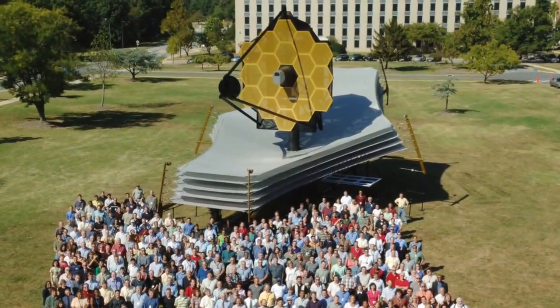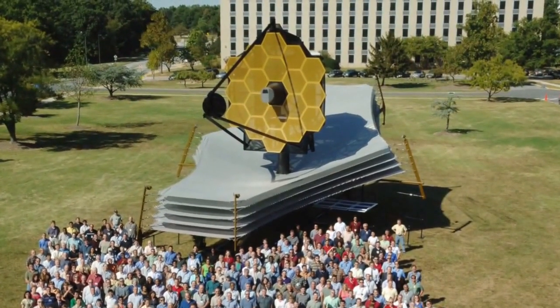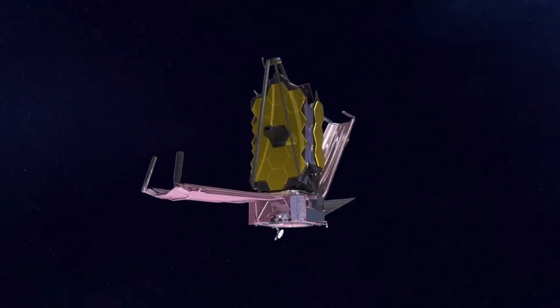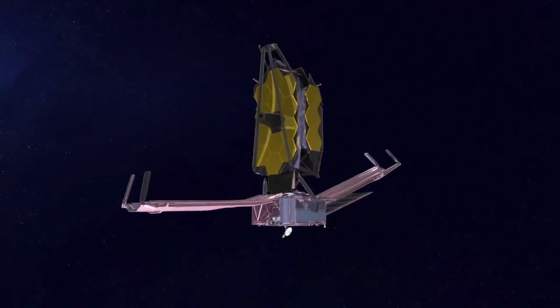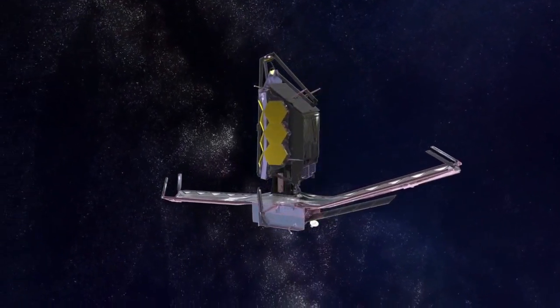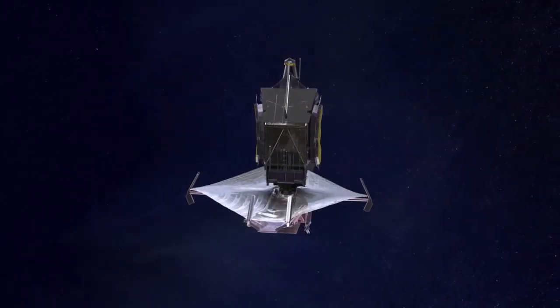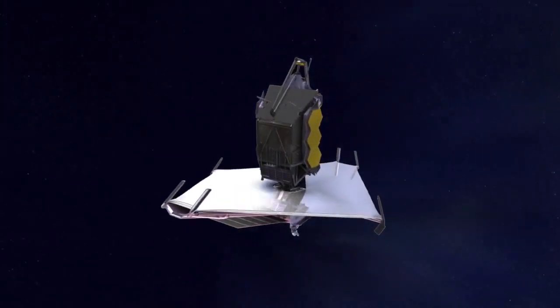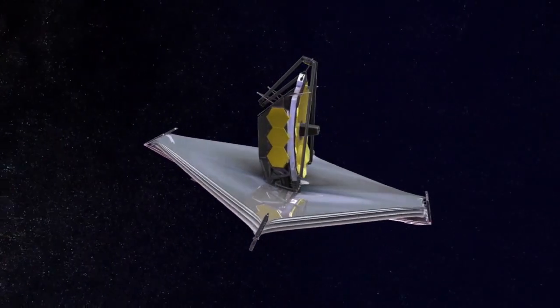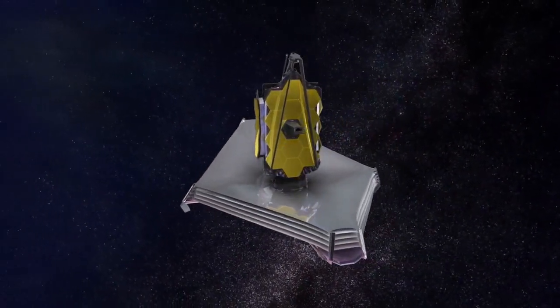How do we get something that size into space? Obviously we can't ship it like this. The answer is origami. We're going to fold Webb up inside the rocket that launches it into orbit. Once it's in space, it starts to unfold. The massive mirror opens up. Its tennis court sized sun shield, which will protect it from unwanted infrared emissions from the sun, earth and moon, stretches out. And all this happens while it travels approximately a million miles away to a point farther away from our planet than even the moon.